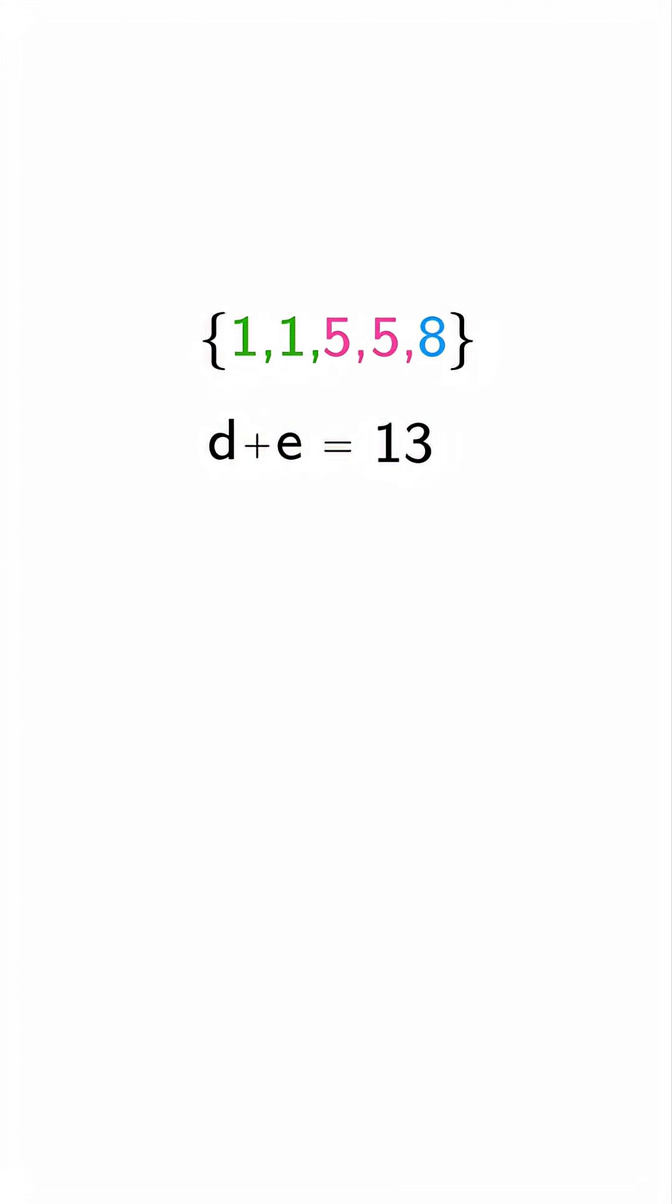Let's test a few pairs. If we try five and eight, we get one, one, five, five, eight. But now, one and five both repeat. That means we have two modes, not one. That won't work.